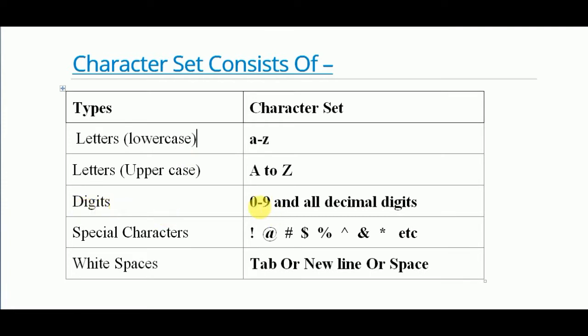Next, digits. What types of digits are used in the character set of C? Digits from 0 to 9 — all decimal digits are used.